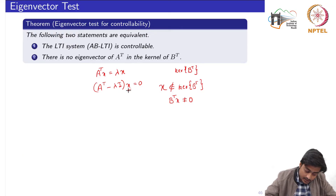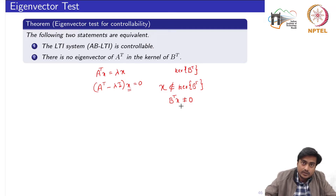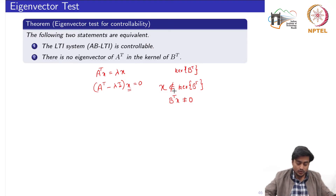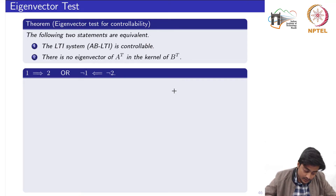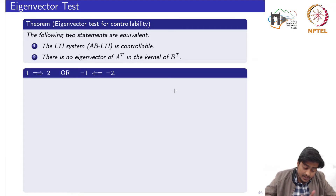What we need to show is that there is no eigenvector x satisfying A-transpose x equals lambda x that also satisfies B-transpose x equals 0. We prove the direction 1 implies 2 — that if the pair (A, B) is controllable then there is no eigenvector of A-transpose in the kernel of B-transpose — through negation: if there is an eigenvector of A-transpose in the kernel of B-transpose then the system is not controllable.